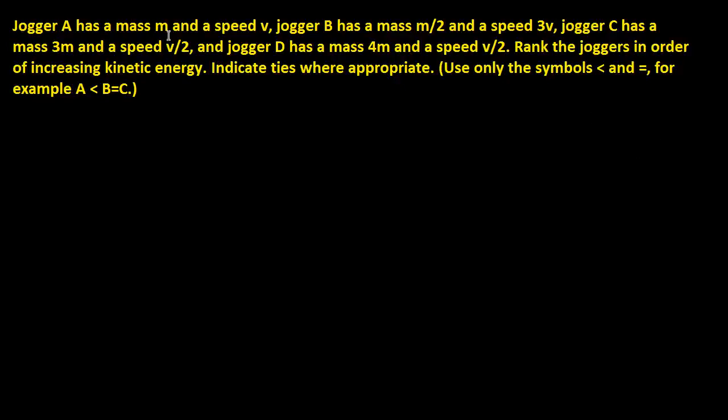Jogger A has a mass m and a speed v. Jogger B has a mass m over 2 and a speed 3v. Jogger C has a mass 3m and a speed v over 2. And Jogger D has a mass 4m and a speed v over 2. Rank the joggers in order of increasing kinetic energy. Indicate ties where appropriate.